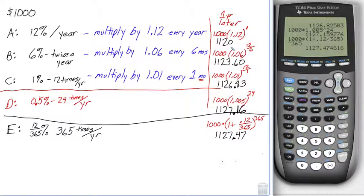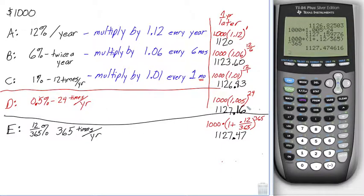When we just doubled how often we compounded — once per year to twice per year — we went up $3.60. Now we're going from 24 times per year to 365 times per year, which is far more than doubling, and we're only adding about $0.31. Not very much.